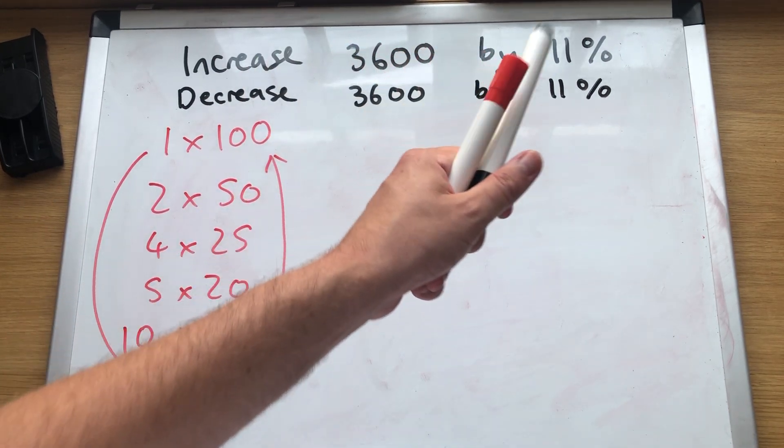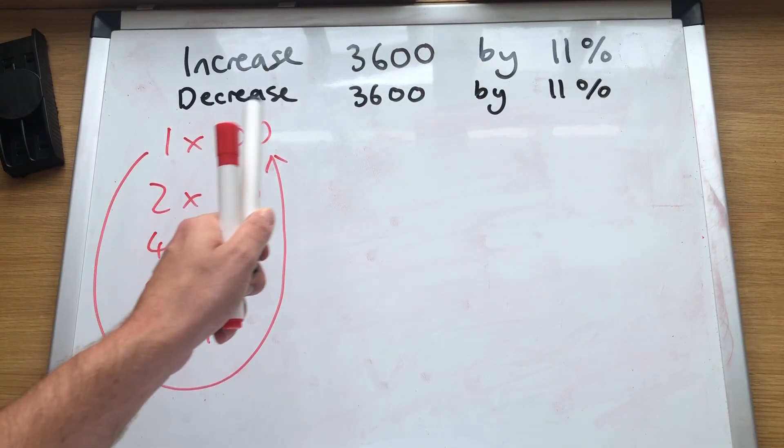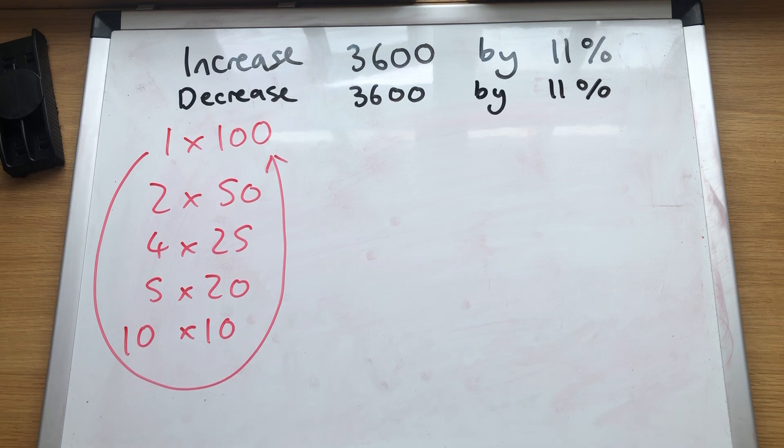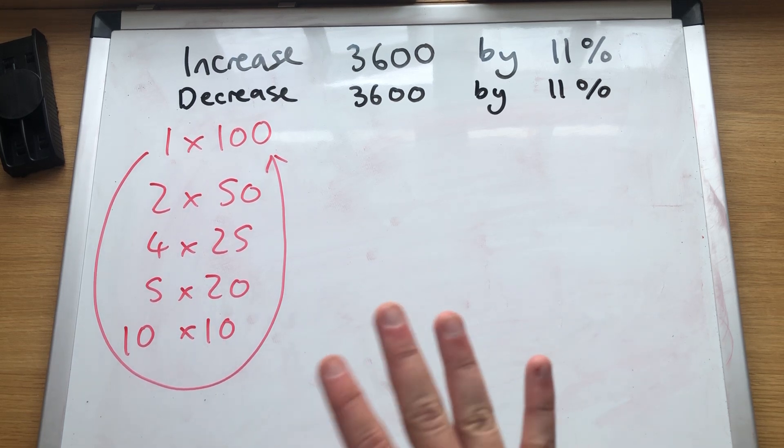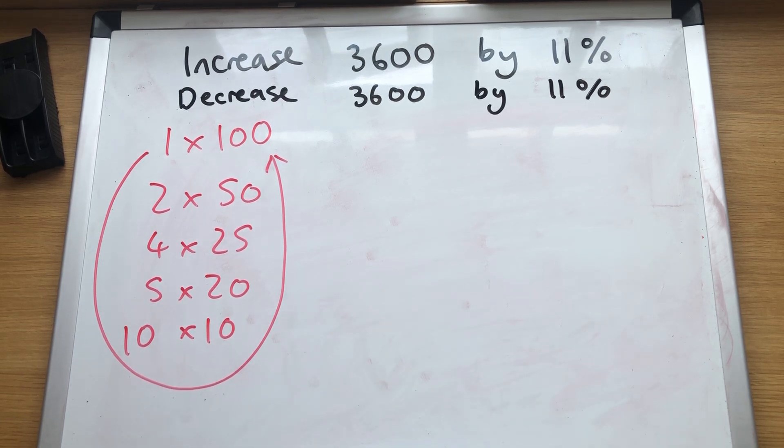Increase 3600 by 11%, decrease 3600 by 11%. These questions here really aren't too bad at all.